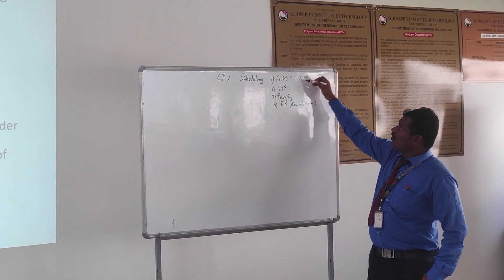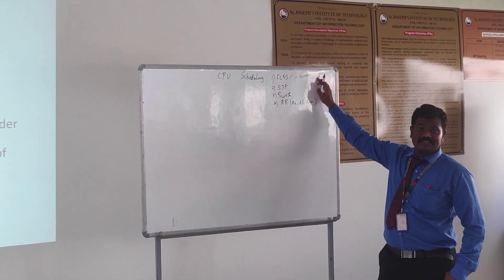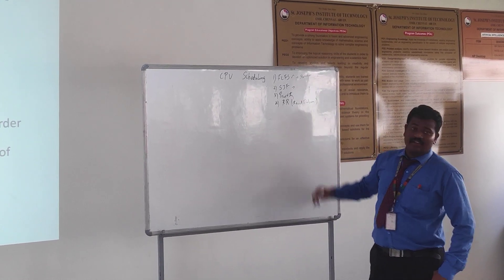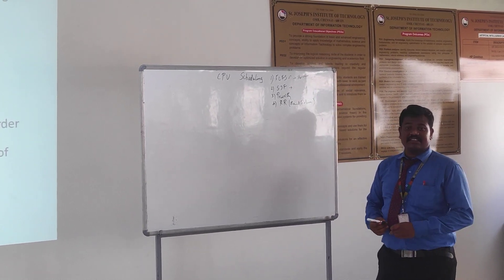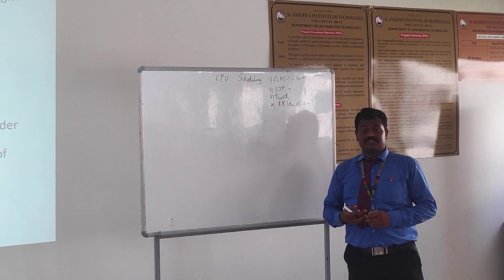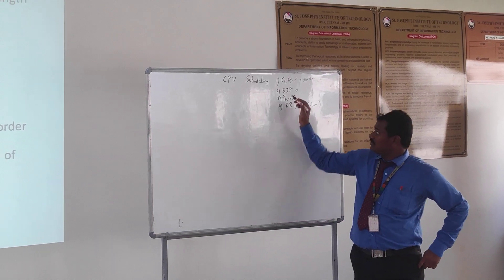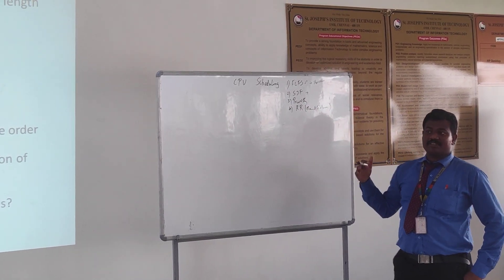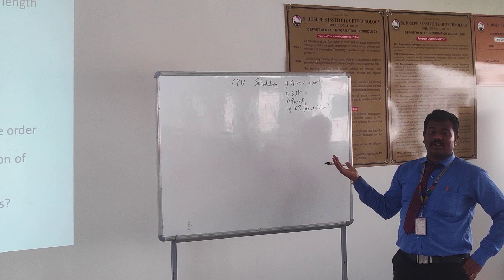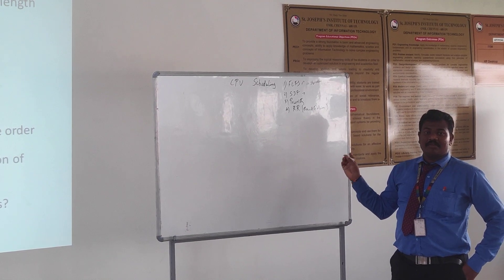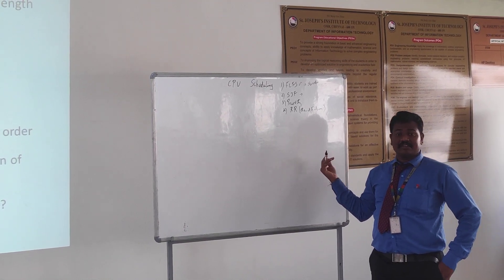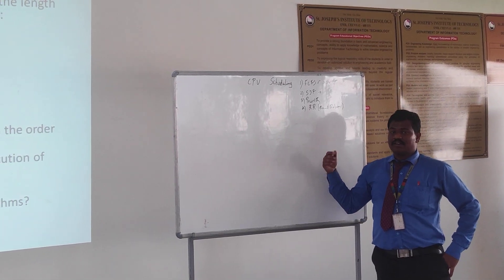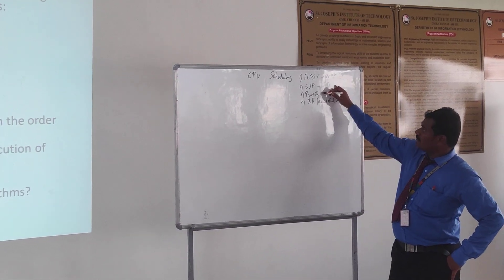To address starvation, a second CPU scheduling algorithm has been introduced. It is nothing but Shortest Job First. This Shortest Job First algorithm means the CPU will schedule processes according to their burst time. Burst time is nothing but the actual time taken for the process to complete its work.